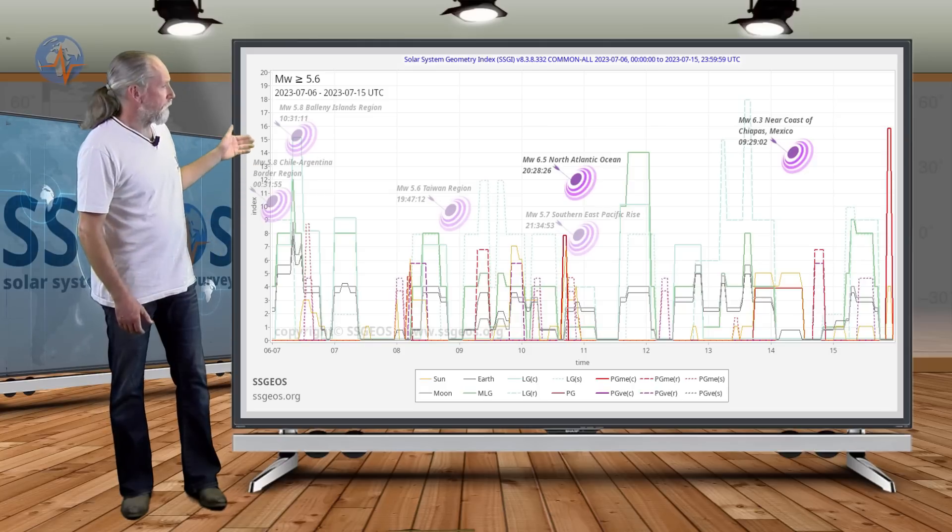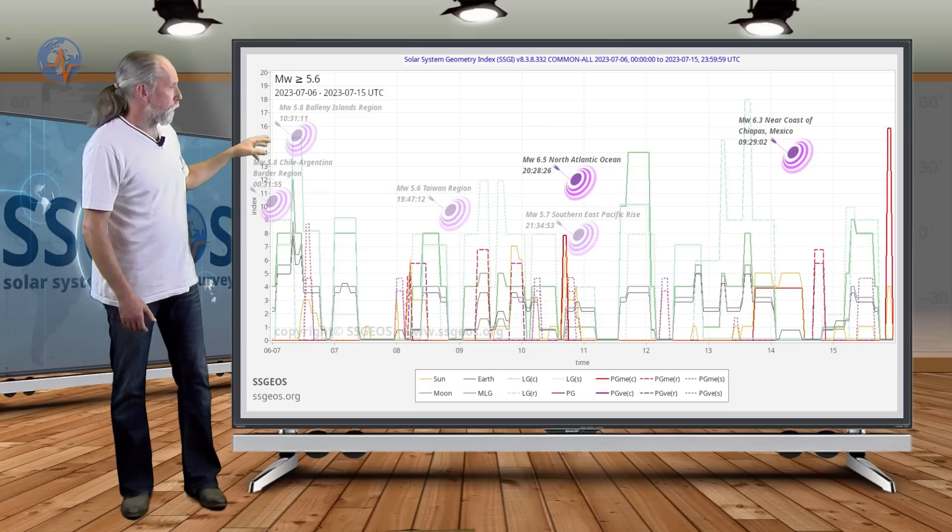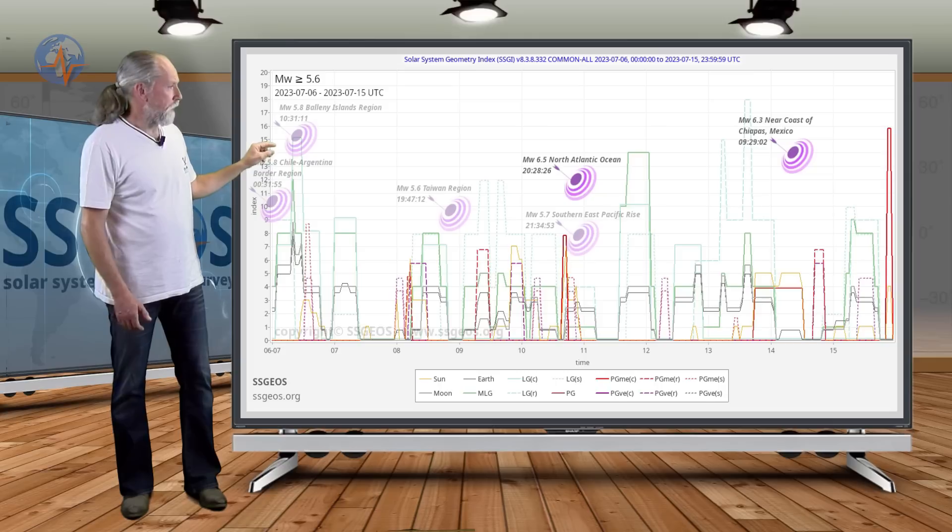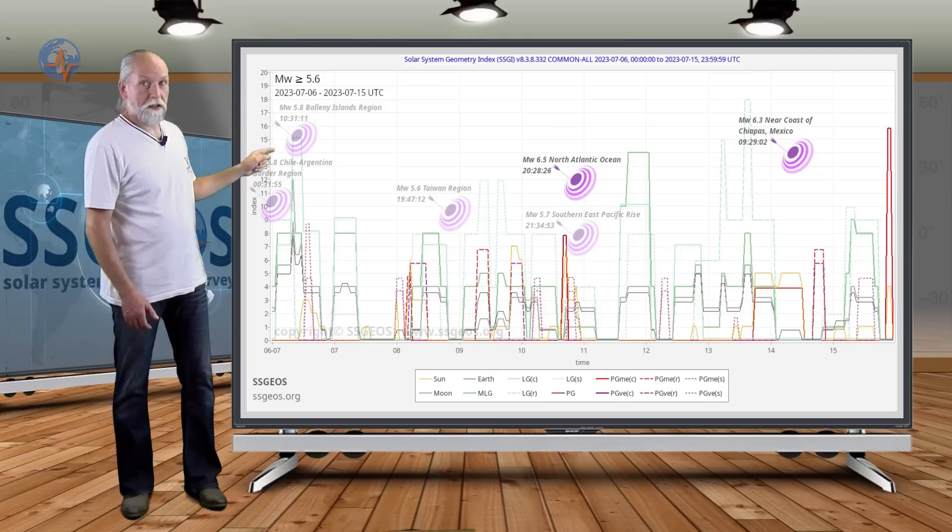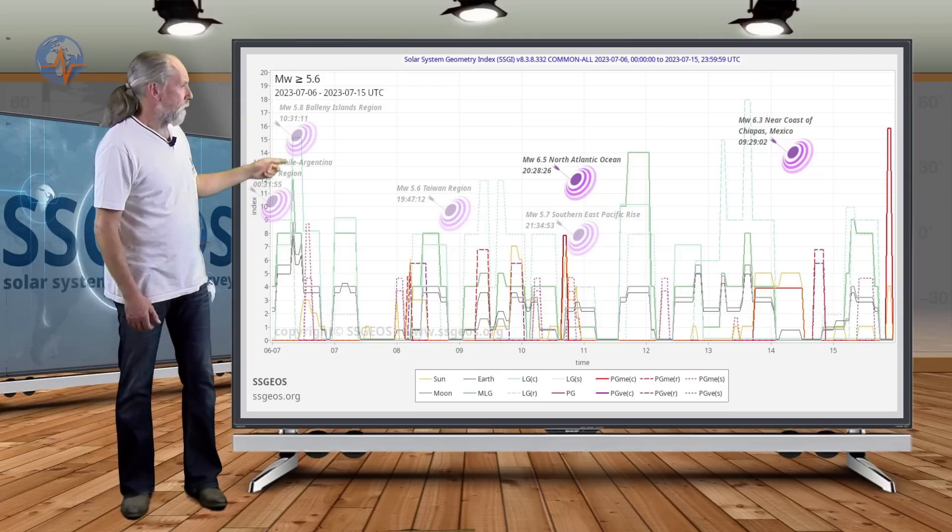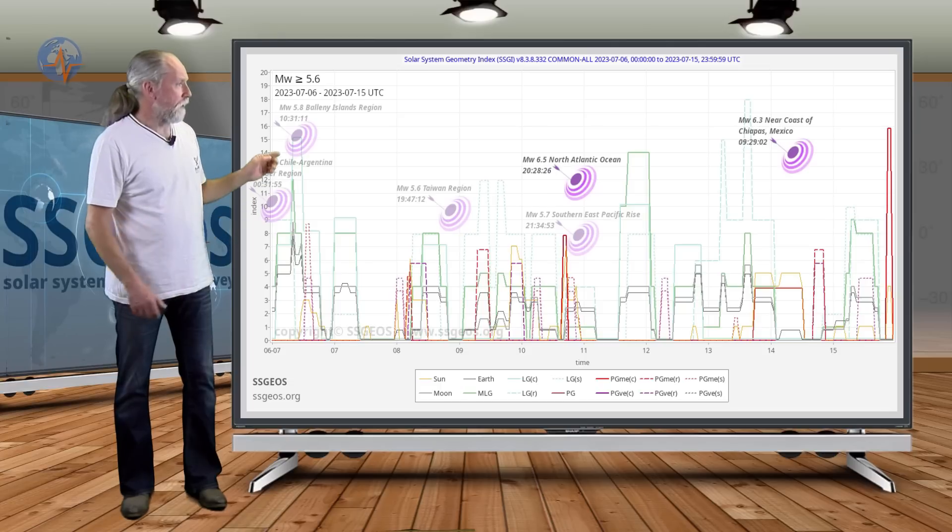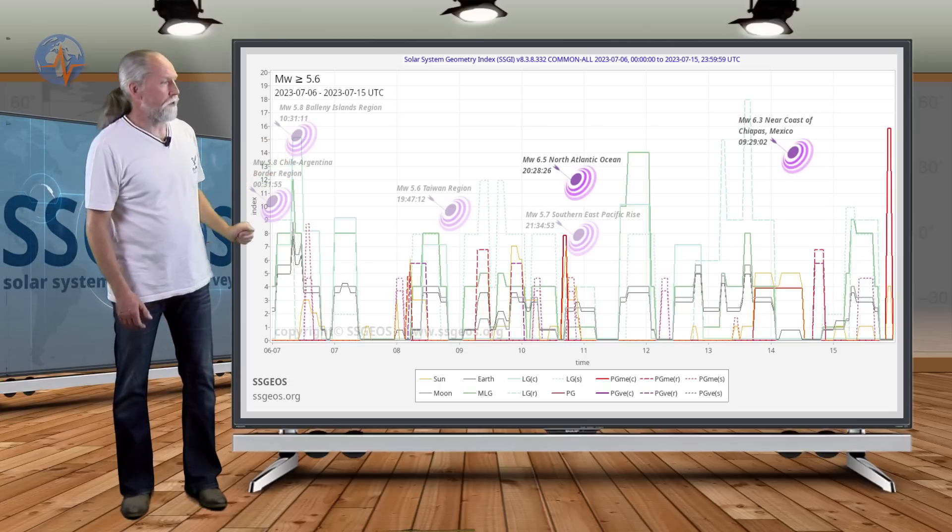Then on the 14th we had a 6.3 near the coast of Chiapas, Mexico. As you can see, the seismic increase and clustering typically occurs with clustering of planetary geometry. Only one planetary conjunction as I mentioned in the previous forecast happened on the 10th, and we see the strongest earthquake right there, also later on the 10th.